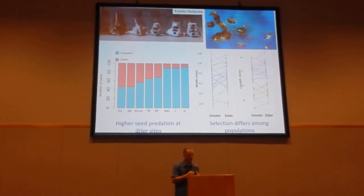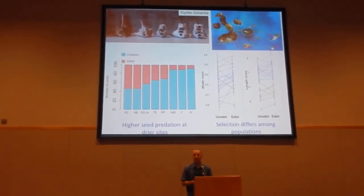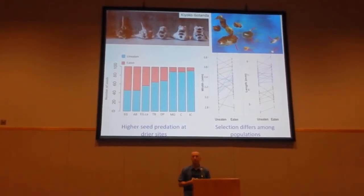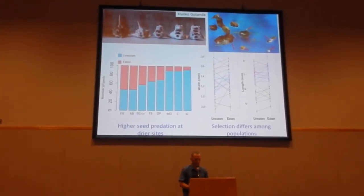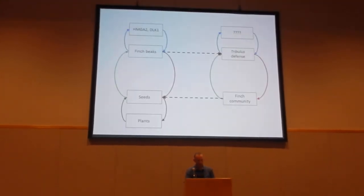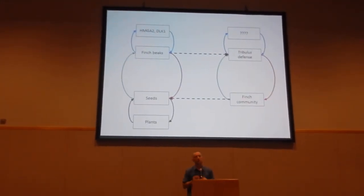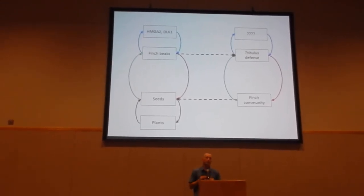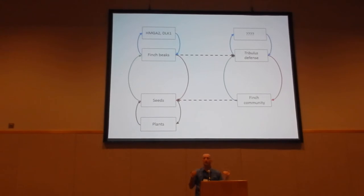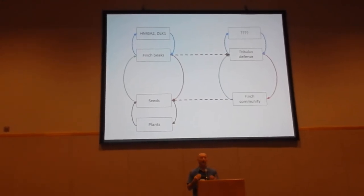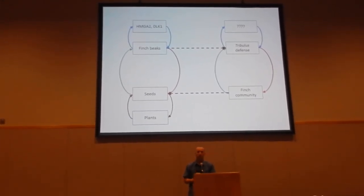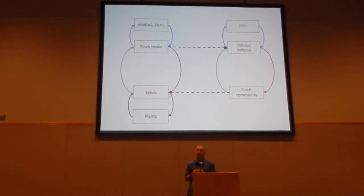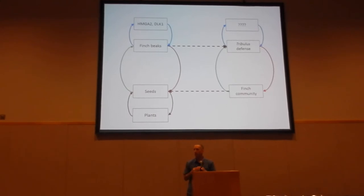Our hope is to link that spatial variation in natural selection to spatial variation in Tribulus itself and to spatial variation in conditions, both experimentally and observationally. In the end, we hope the Galapagos system will be a good place not just for studying how adaptive radiation works, but for studying how evolution feeds back to influence community structure, population dynamics, maybe even ecosystem function, and the genetic basis of those eco-evolutionary interactions.